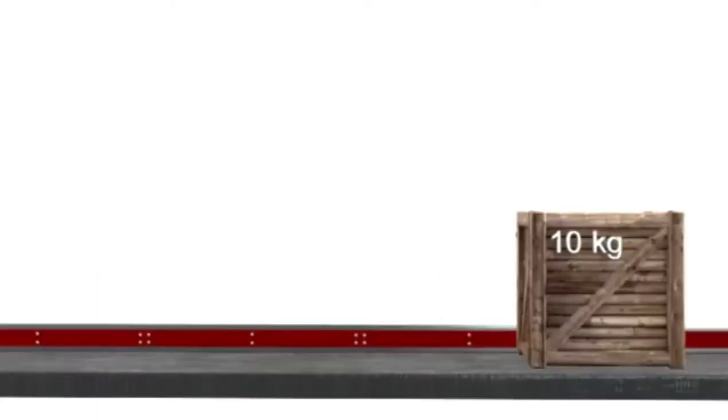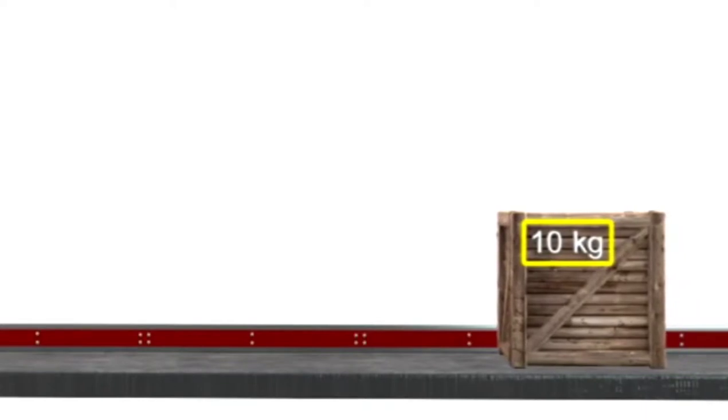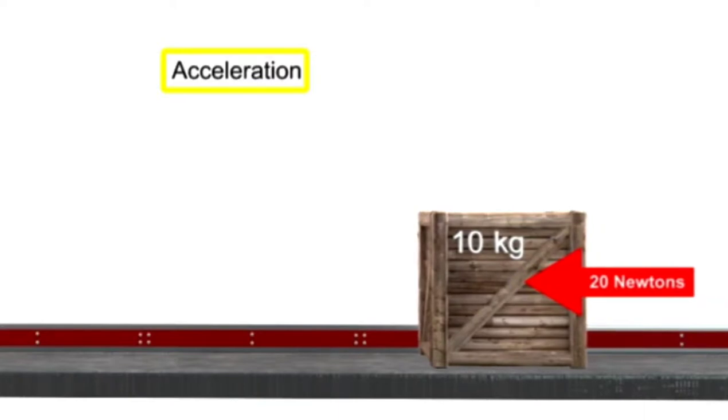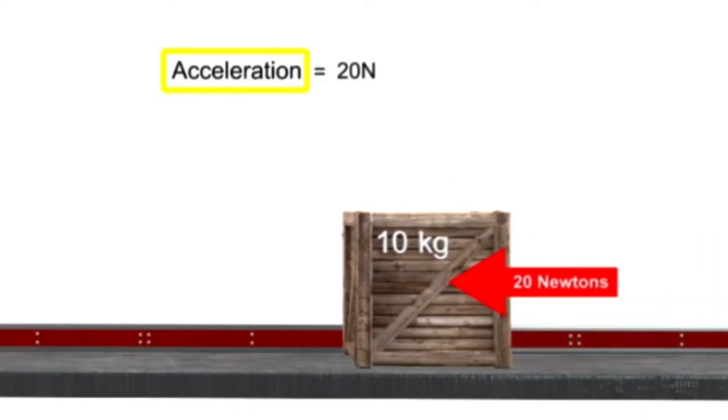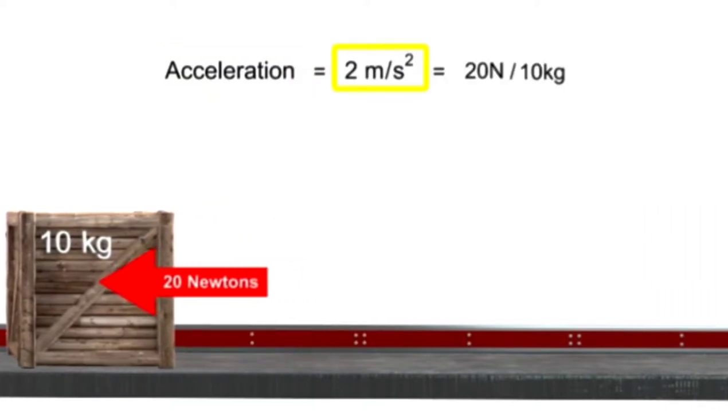Take, for instance, a scenario where you're pushing a 10-kilogram box along the ground with a force of 20 newtons. The acceleration of the box equals the force you exert divided by the mass of the box, or 2 meters per second squared.